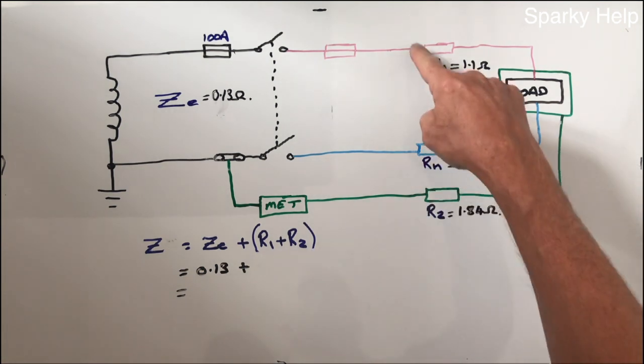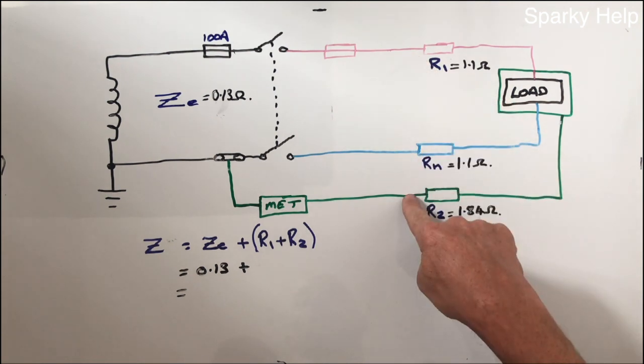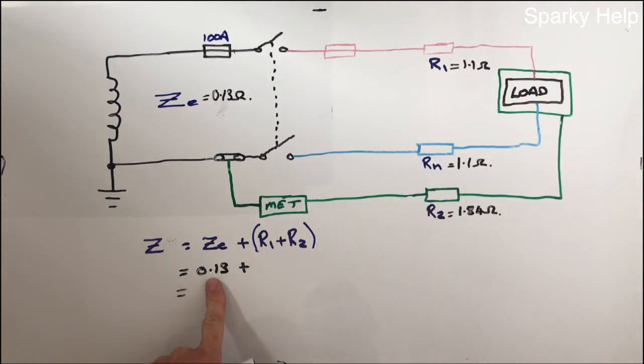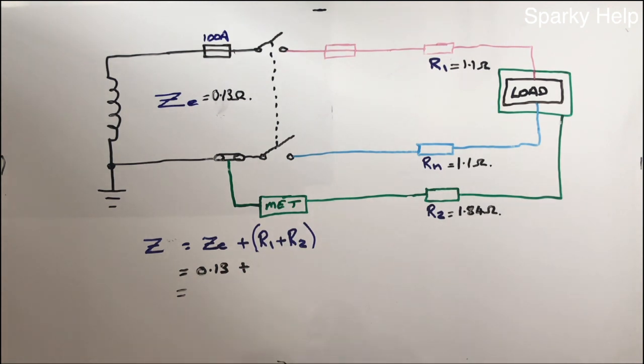So we want to do a fault which would be midway. How much fault current would flow if we had midway between these two points? So ZE will remain unchanged, because we have nothing to do with that. The bit that is going to change is R1, R2, so because resistance is proportional to length, we need to divide this answer by 2. So we have 1.1 plus 1.84 and we divide, I put this in brackets, divide this bit by 2.